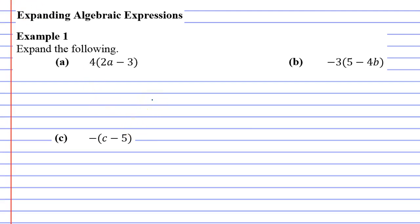Basically when you're expanding algebraic expressions, we draw kind of like a little arc that joins the 4 to the 2a and also joins it to the 3. So whatever number is outside the brackets is joined to each term inside the brackets and we multiply.